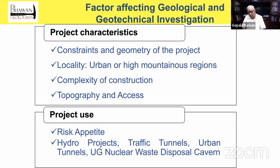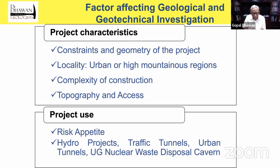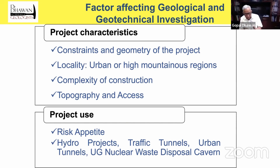Geological and geotechnical investigations cannot be uniformly addressed for all types of tunnels and all types of grounds. These are very site-specific. Some of the factors which influence the investigation process are: project characteristics — geometry, locality (urban or mountainous area), complexity of construction and geology, topography and access, and the project use. Hydro projects have a different risk appetite, whereas nuclear and underground disposal caverns have a different risk appetite — you cannot take any chance. Barton in his classification has given the ESR parameter which takes care of that. We have to adjust our investigations according to the type of the project.